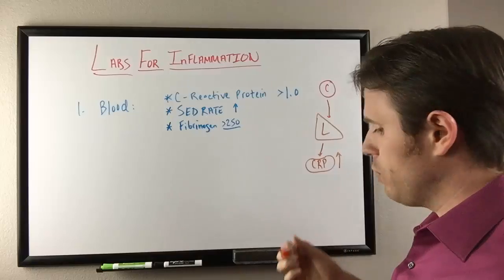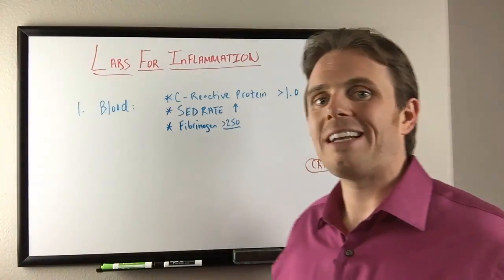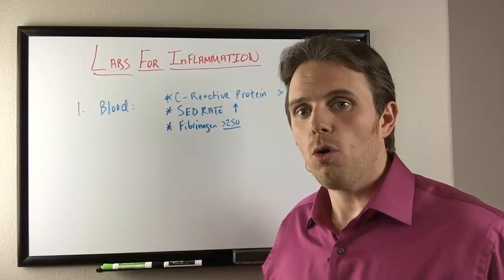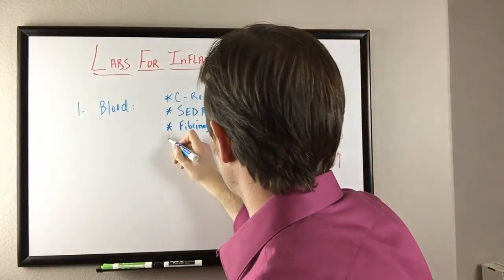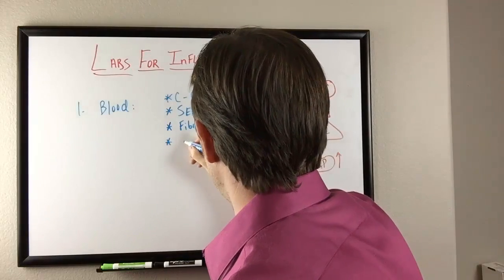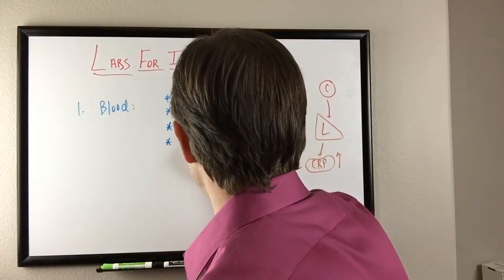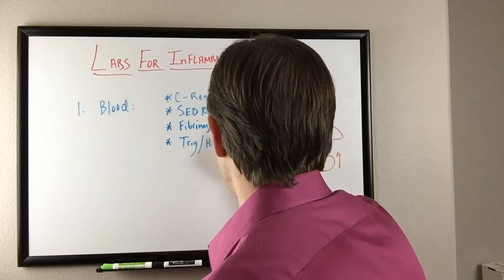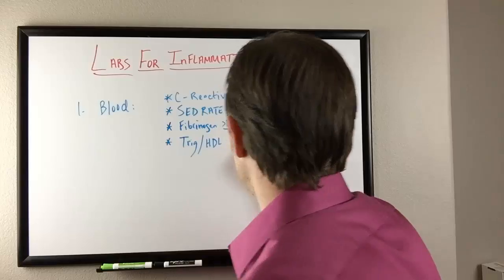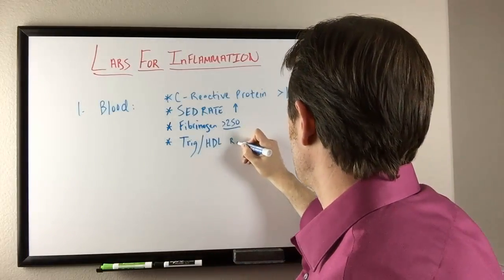Next, this is a really good marker. Typically when we're eating excessive sugar and excessive carbohydrate, we're going to be driving inflammation. One of my favorite markers here for inflammation is going to be the triglyceride to HDL ratio.